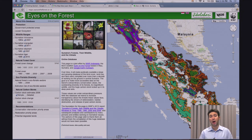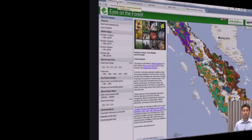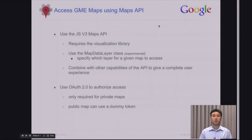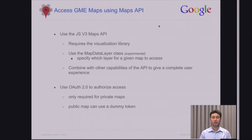Now that we've seen why you'd want to do something like this, let's take a look at how to use the JavaScript API to accomplish it. To use the JavaScript version 3 API to programmatically access a Maps Engine map, there are two things: first, you embed a map within your web application; and second, you call Maps Engine to include one or more layers to be displayed as overlays on top of the map.